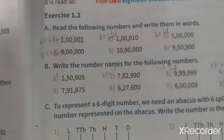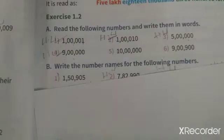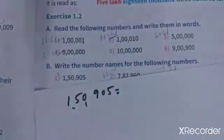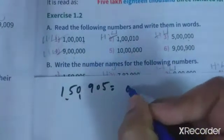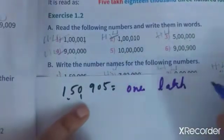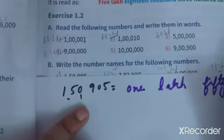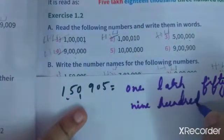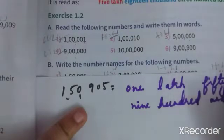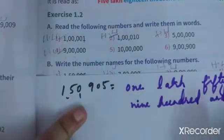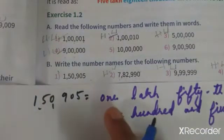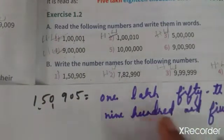The second and third are homework. Now, one lakh fifty thousand nine hundred and five — you have to write this in words. One lakh fifty thousand nine hundred and five is given in a number; now you have to write it as a word: one lakh fifty thousand nine hundred and five.